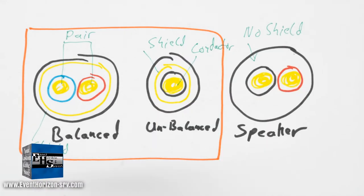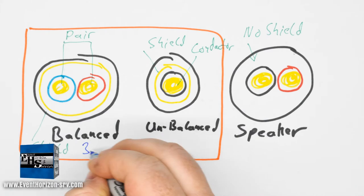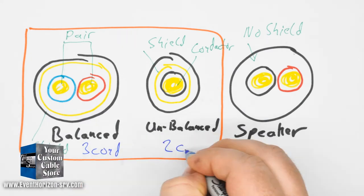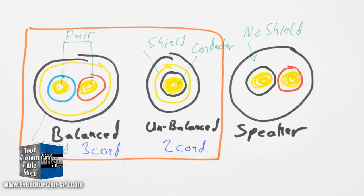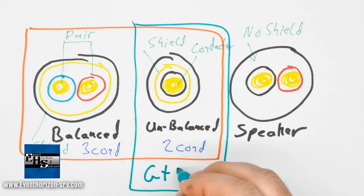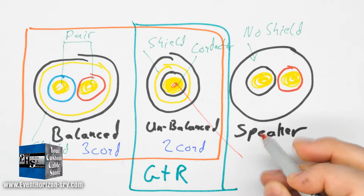A balanced cable has three conductors including the shield, and an unbalanced has two conductors including the shield. Guitars in most cases use unbalanced cable with the center conductor being the signal and the shield being the shield and the signal ground.